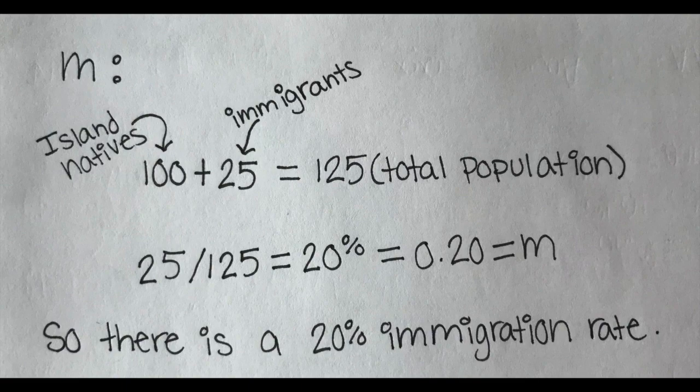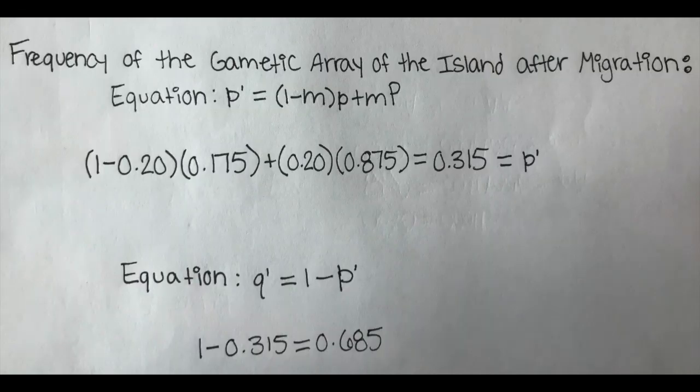Then we do 25 divided by 125, which gives us 20%. This means Snail Island has a migration rate of 20%.